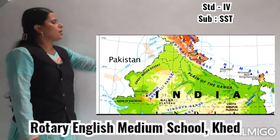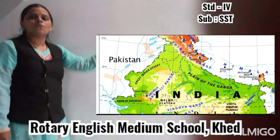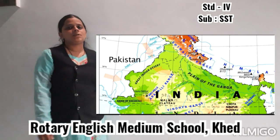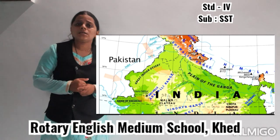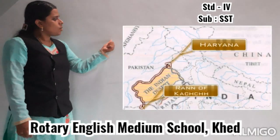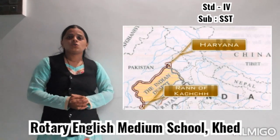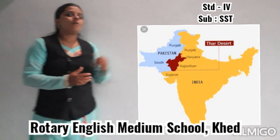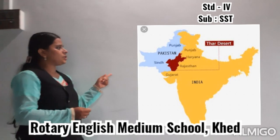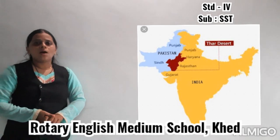So where is the Thar Desert located? To the west of Aravli Hills in Rajasthan. It is located in the northwestern part of India. After that you will see that outward it is extended — from the Rann of Kutch in Gujarat to Punjab and Haryana in the north.